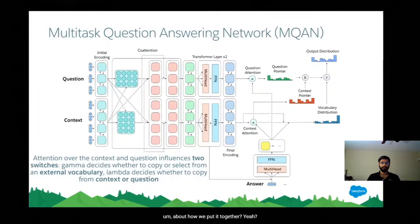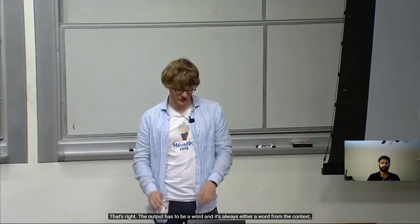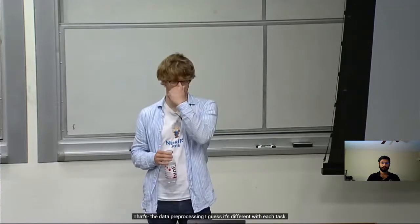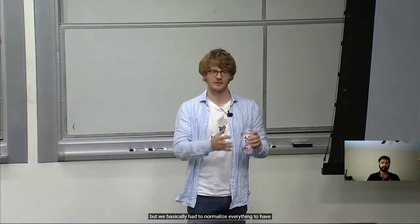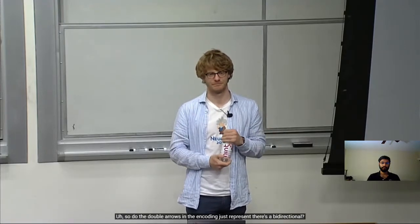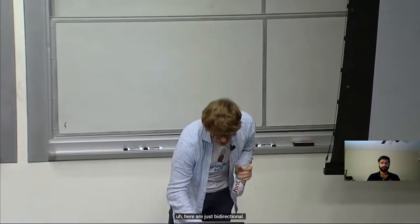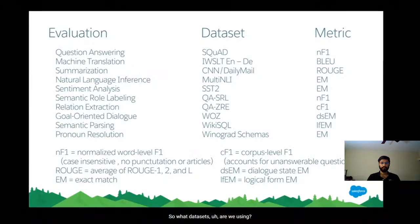Question: If the output has to be a word, is it always from the context, question, or softmax? Yes, always one of those three. Question about data pre-processing: it's different for each task, but we normalized everything to have the same tokenization. The double arrows in the encoding just represent the bidirectional LSTMs — left to right and right to left.